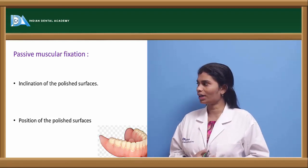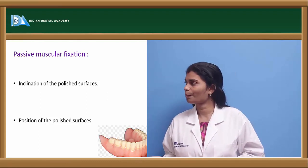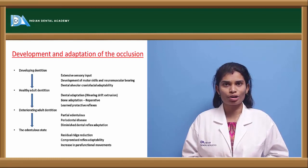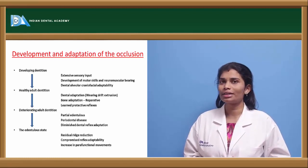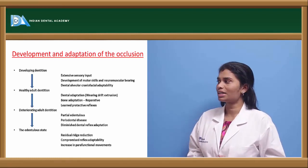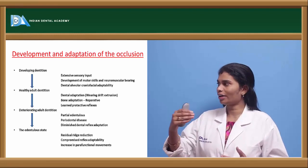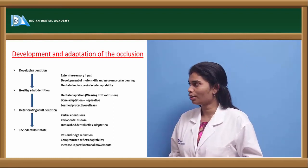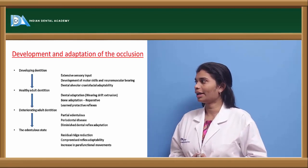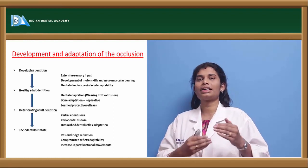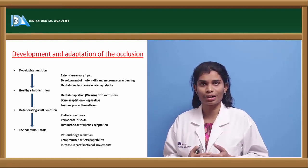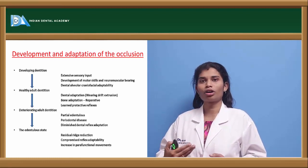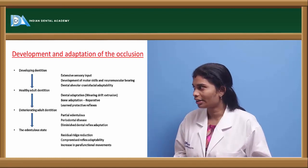Passive muscle fixation is affected by the inclination and position of the polished surfaces. The development and adaptation of occlusion starts from birth. During the developing stage toward healthy adult dentition, there is excessive sensory input, development of motor skills, neuromuscular bearing, and dento-alveolar craniofacial adaptation. As the person ages, sensory output keeps maturing and dento-alveolar craniofacial adaptation is seen.